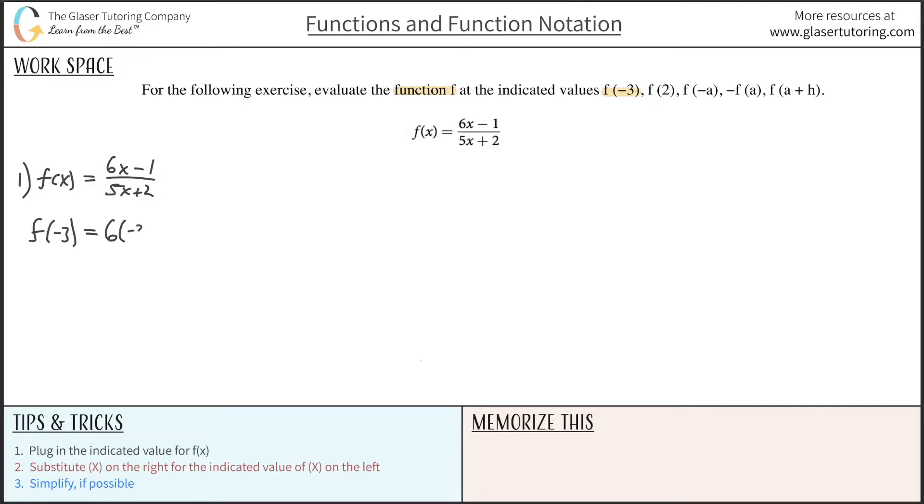So this is now 6 multiplied by negative 3 minus 1 all over 5 times negative 3 plus 2. And we're done, right? I mean, all we have to do is now simplify. Okay, we're done with the harder part, I guess. Right? The harder part is just, I mean, it's not even hard, right? It's just we just got to substitute it.